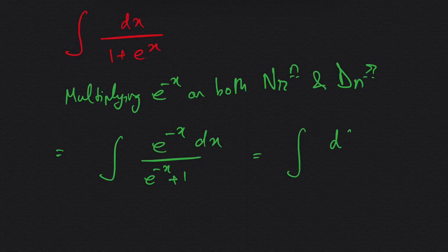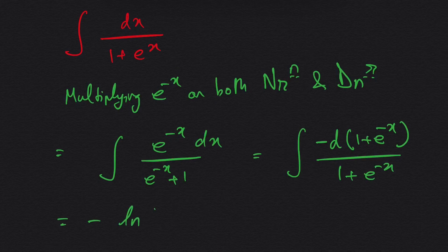The lower part will be 1 plus e to the power minus x, so it will become minus ln of 1 plus e to the power minus x, plus integration constant c.